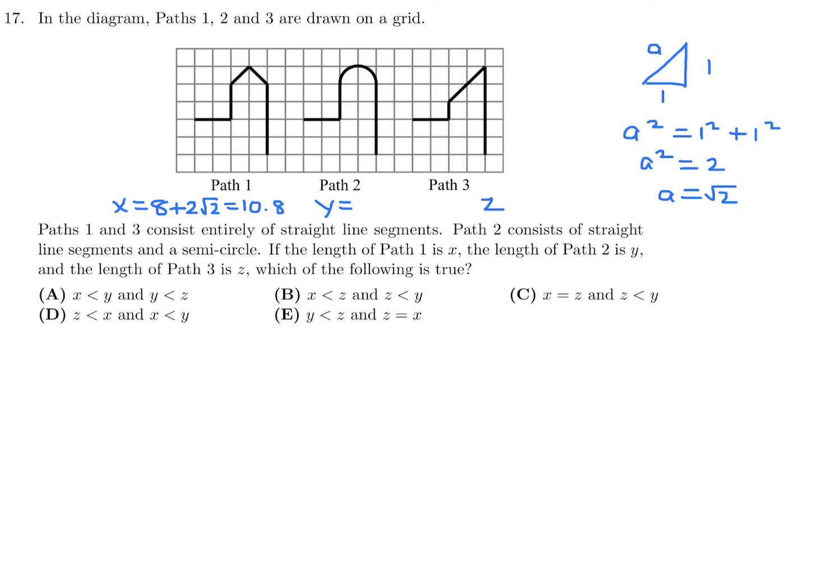Let's figure out y and z. z, 1, 2, 3, 4, 5, 6, 7, 8. So the 8 part I get immediately, and then I've got two diagonals. And those two diagonals I already figured out were each root 2. So two of them would be 2 root 2. And again, that's 10.8. It's the exact same as x. So x equals z. So I can immediately eliminate a and d.